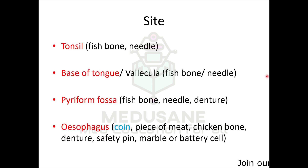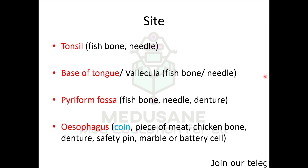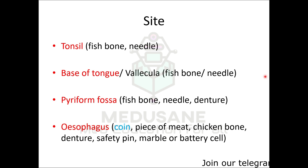In the food passage, the foreign body can be either stuck in the tonsil — such a foreign body is usually a fish bone or a needle — and it can be easily removed under vision with a forcep. Further down, the foreign body can get stuck in the base of the tongue or in the vallecula, and generally such foreign bodies, again a fish bone or a needle, can be removed with a forcep.